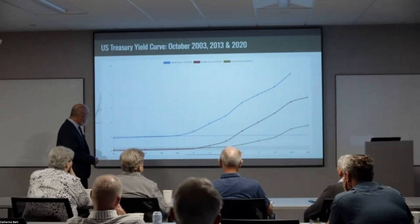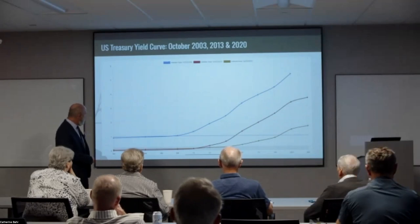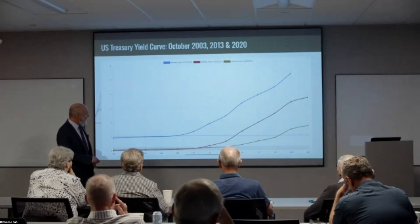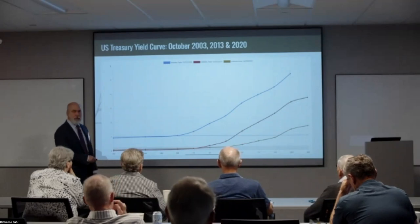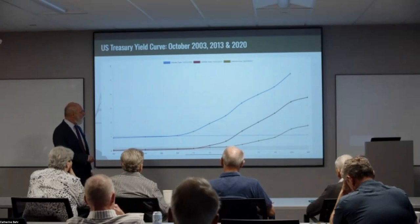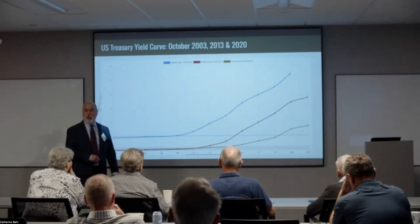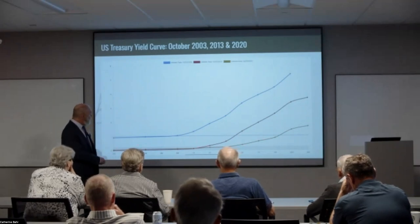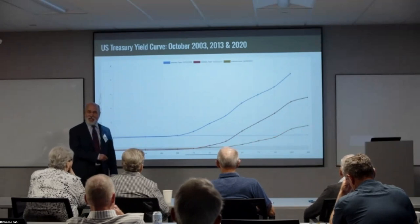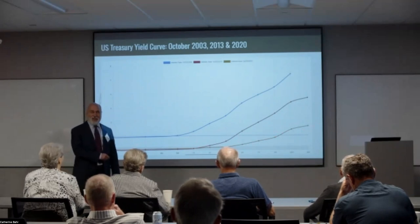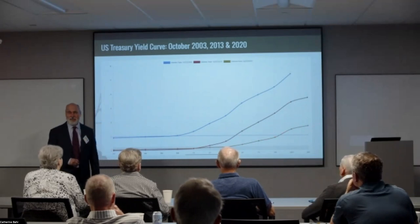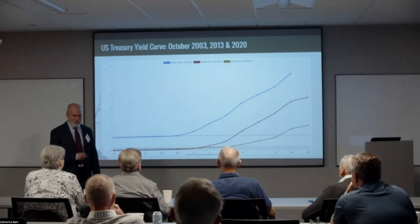Warren Buffett even called bonds at this time instruments that had risk without return. Zero percent interest from a month to a year on a Treasury bond, and then paltry beyond that. It is still upwardly sloping — a normal yield curve — but you didn't get paid much.